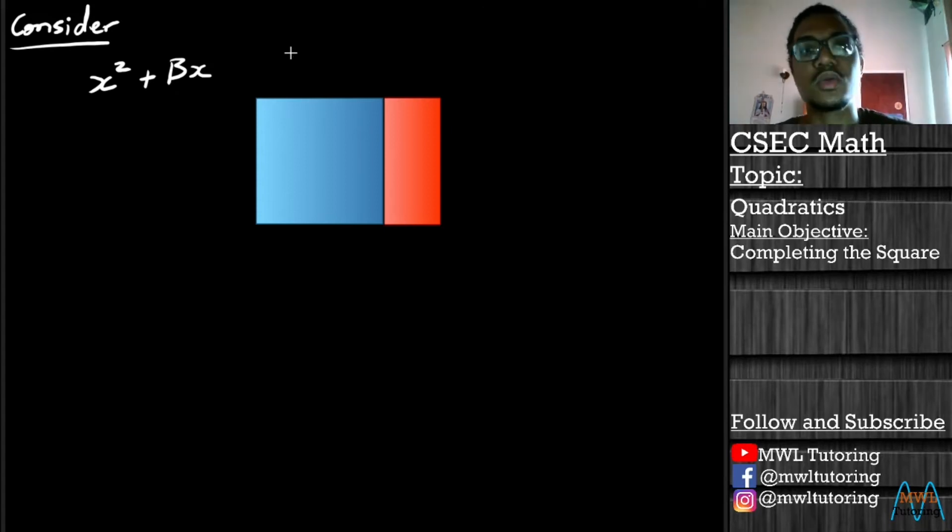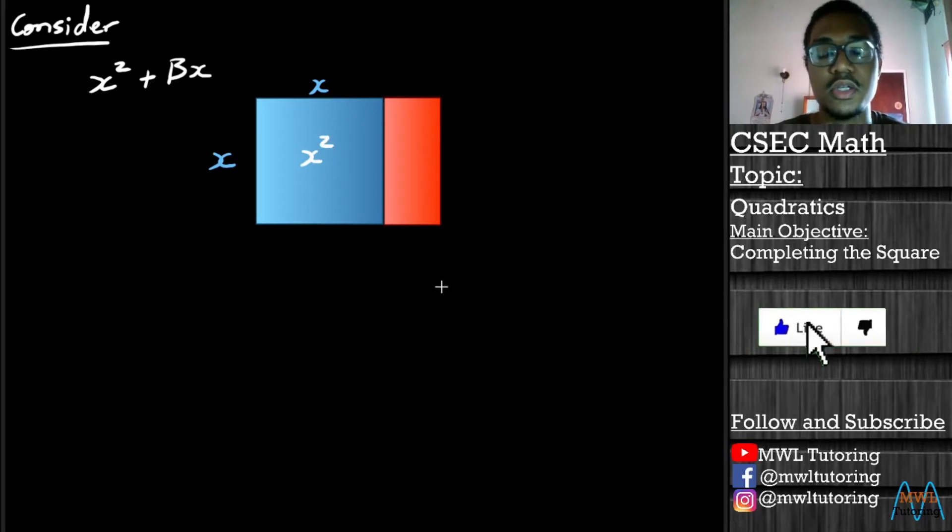So x squared: if we say for our blue square that the sides of our square is x units long, then we have x at the top here, we have x here and the area of our square is x². So the blue square represents x².